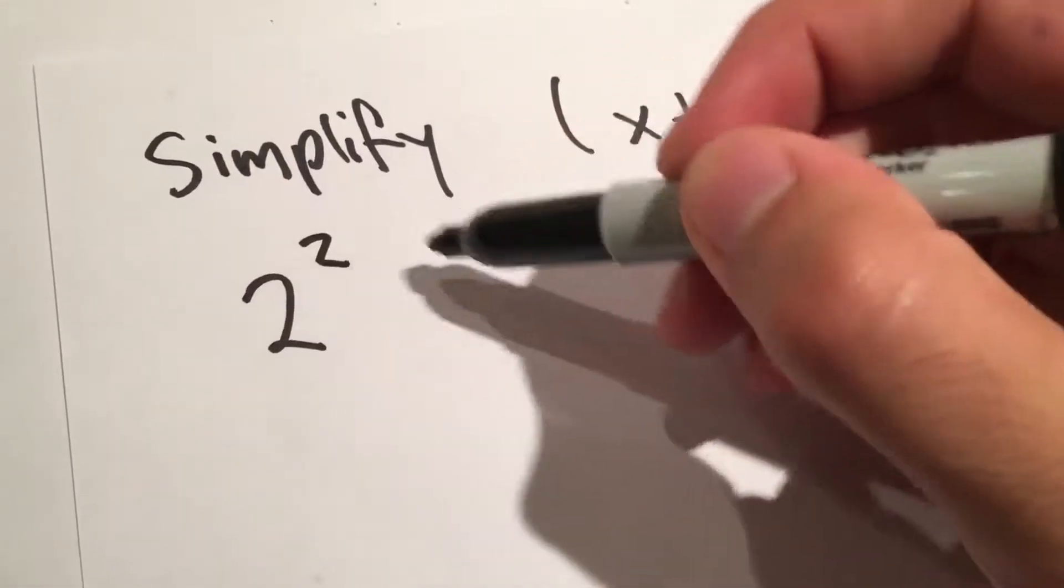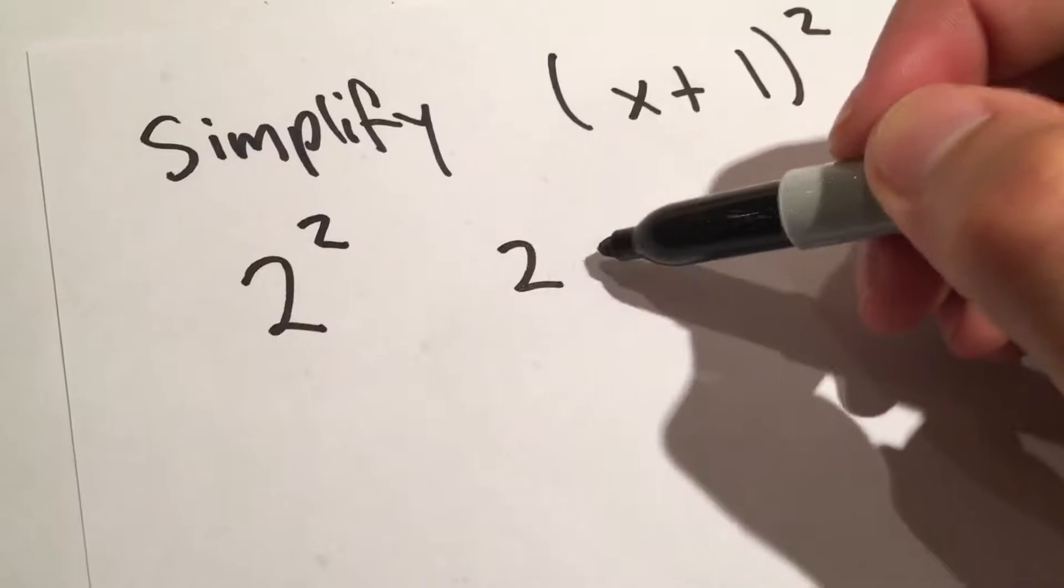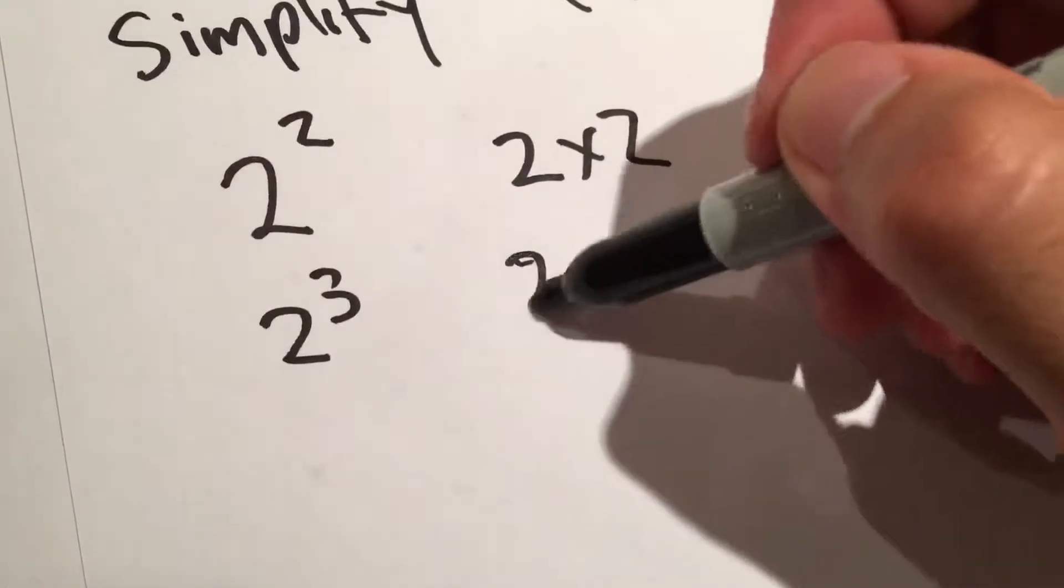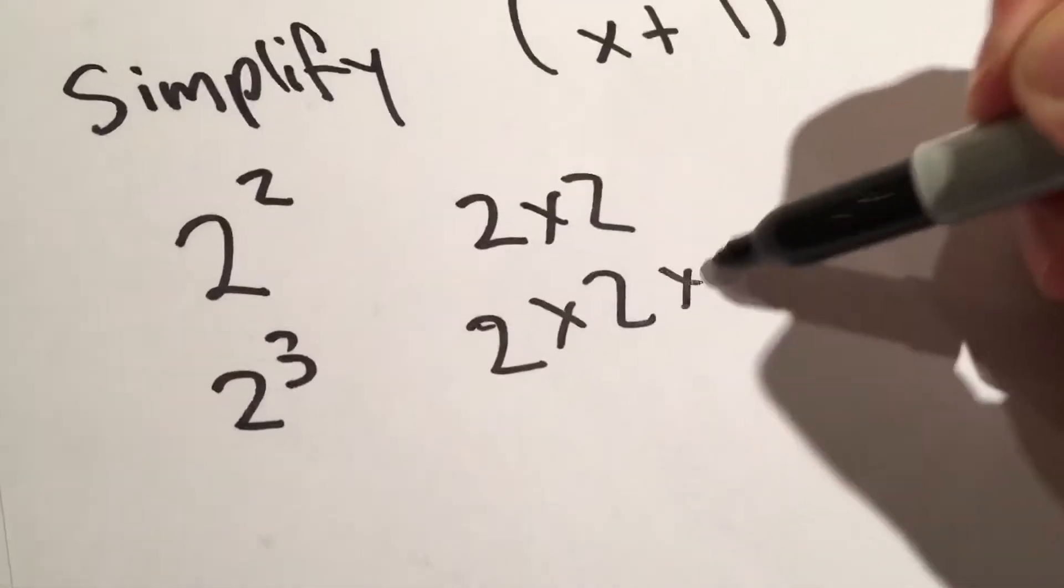So for example, if we had 2 squared, we just go 2 times 2. If we had 2 cubed or to the third, it would be 2 times 2 times 2.